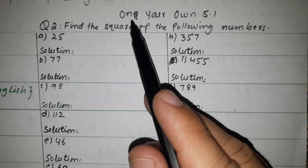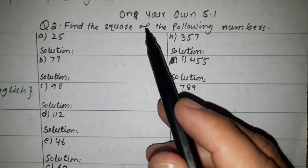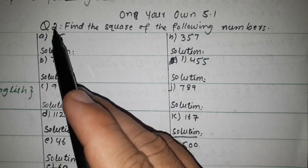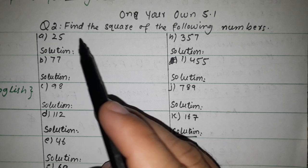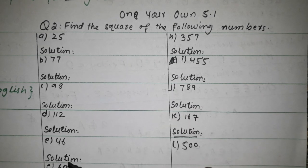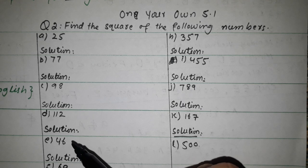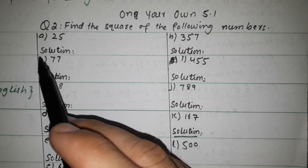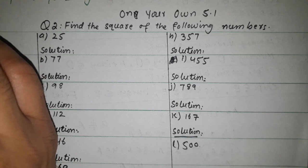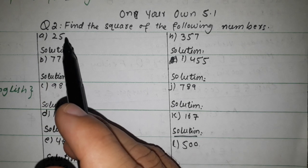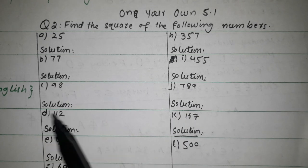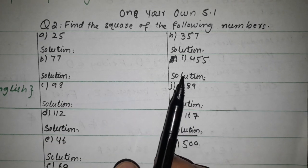The next chapter: Exercise 5.1, Question 2. Question 2 is: find the square of the following numbers. Square means the number multiplied by itself — that will be the answer, the square.